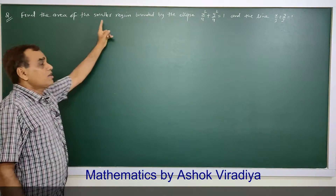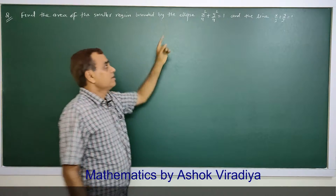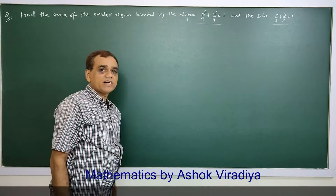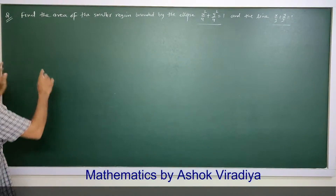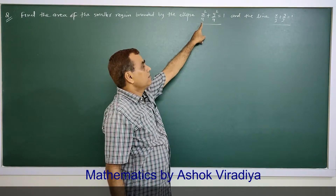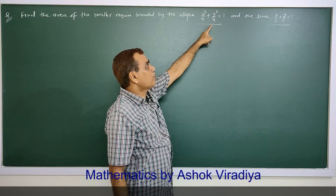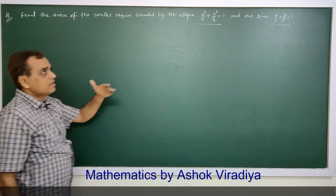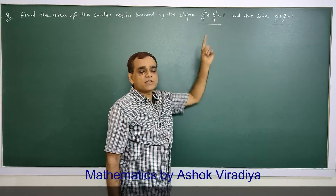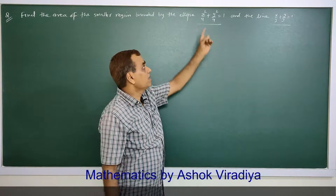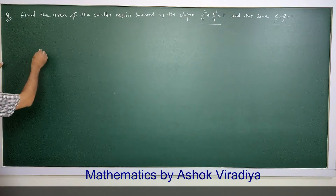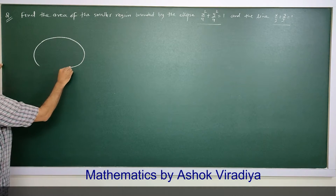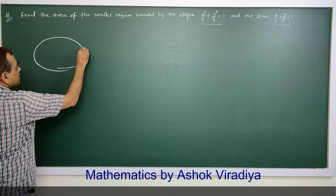Find the area of the smaller region bounded by ellipse and line. First of all we take a diagram for the ellipse. The denominator of x square is greater and the denominator of y square is smaller, so the x axis will be the major axis of this ellipse. It will be lengthy along the x axis.